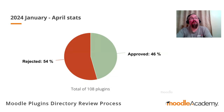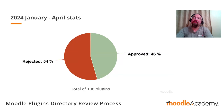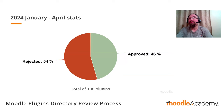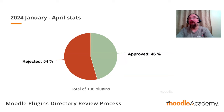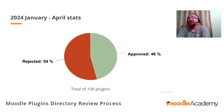In the period between January and April, approximately 108 plugins were reviewed. 54% of those were rejected when they first came in and 46% were approved. Some of the approved ones may have had some iterative reviews where developers responded quickly. Unfortunately, some reviews are taking a bit of time at the moment because we don't have many team members volunteering for reviews.